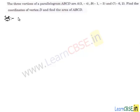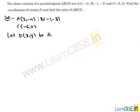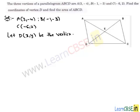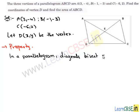The vertices are A(3, −4), B(−1, −3), C(−6, 2), and we assume D has coordinates (x, y). We draw parallelogram ABCD with diagonals intersecting at point E. One way to find vertex D is to use the property of a parallelogram: the diagonals bisect each other. So E is the midpoint of both diagonal AC and diagonal BD.